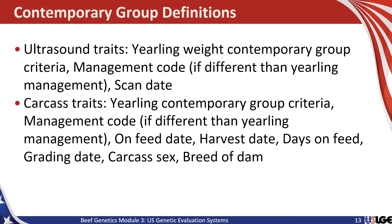For ultrasound traits, those contemporary groups are a subset of the yearling weight contemporary group, in addition to a management code — sometimes the same as their yearling management code — and of course scan date. So animals scanned on different observation dates will be forced into separate yearling ultrasound contemporary groups. For carcass traits, weaning or yearling contemporary group data is used as the base contemporary grouping, with management code, on-feed date, harvest date to control days on feed, grading or slaughter date, carcass gender, and breed of dam as often different components used in carcass data contemporary groups.